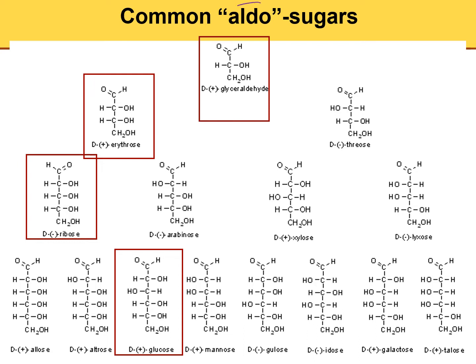Here's an example of a three-carbon sugar — glyceraldehyde — please memorize that. The OH is on the right-hand side, so this is a D form. All of them on this page are D forms because D-form carbohydrates are what's found physiologically in biological systems, just like amino acids where you find primarily the L form in proteins.